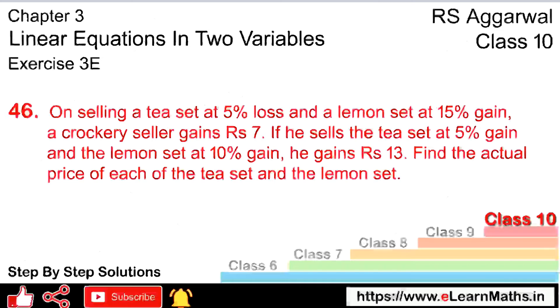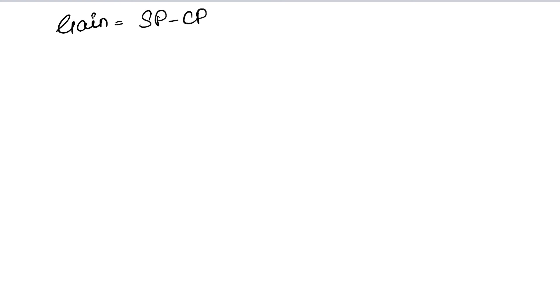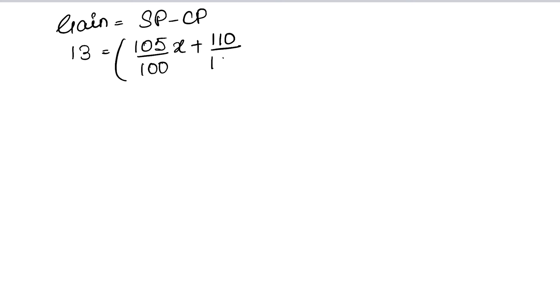Second equation के लिए: if he sells the tea set at 5% gain and lemon set at 10% gain, he has a profit of 13 rupees. Gain का formula SP minus CP है. SP of tea set at 5% gain = (100 + 5) / 100 × X = 105/100 × X. SP of lemon set at 10% gain = (100 + 10) / 100 × Y = 110/100 × Y. Cost price (X + Y) minus करेंगे.